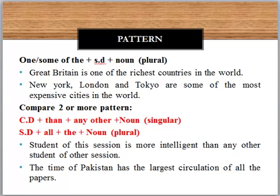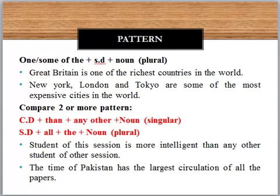We use the comparative degree when we want comparison between two persons or things. You can also use the comparative degree with the structure: comparative + 'than any other' + singular noun. For example: students of this session are more intelligent than any other student of other sessions. You use 'more intelligent' as the comparative degree, then 'any other' followed by a singular noun.